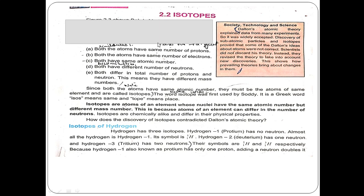The atomic number is the number of protons present in the nucleus of the atom. The number of protons equals the number of electrons, so atomic number is the same. The difference is that both atoms have different numbers of neutrons, meaning they differ in the total number of protons and neutrons — so they have different mass numbers.